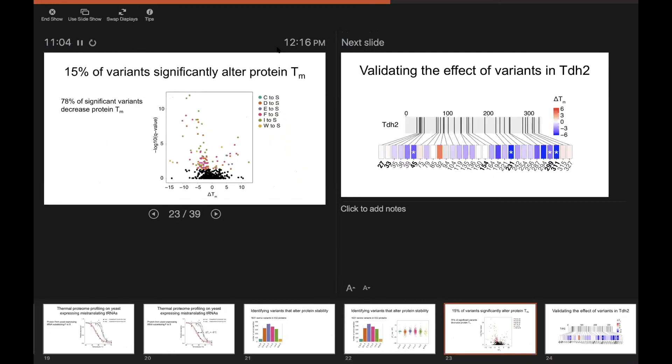Overall, about 15% of the variants in our experiment had a significant effect on TM. And of those, 78% of them decreased TM, suggesting they're destabilizing the protein, which perhaps makes sense because you think mutations are more likely to destabilize proteins than to stabilize them.